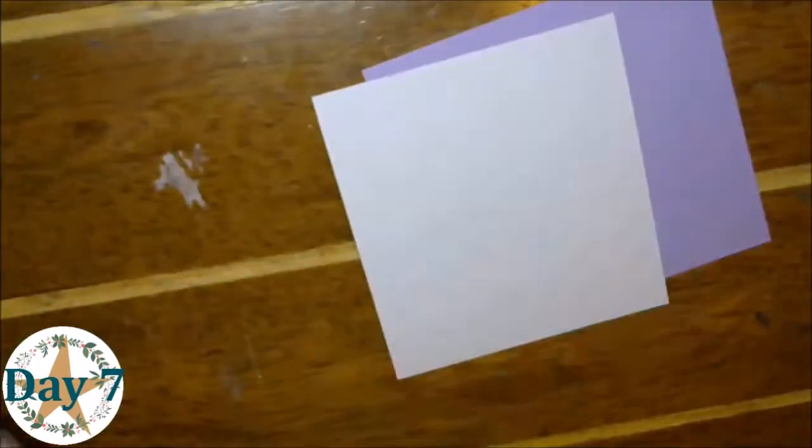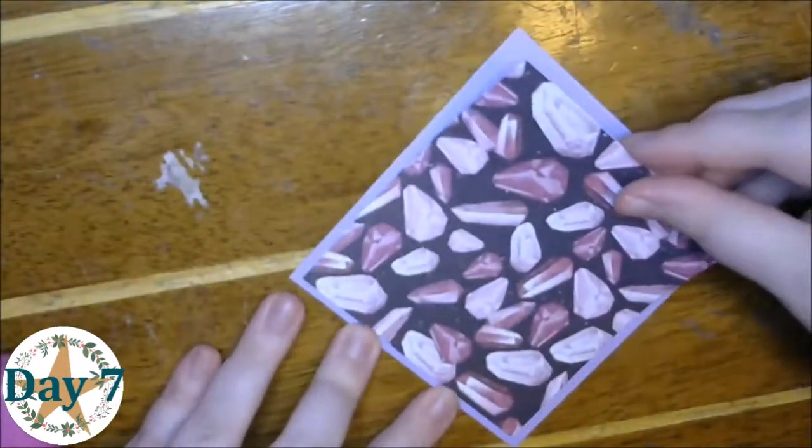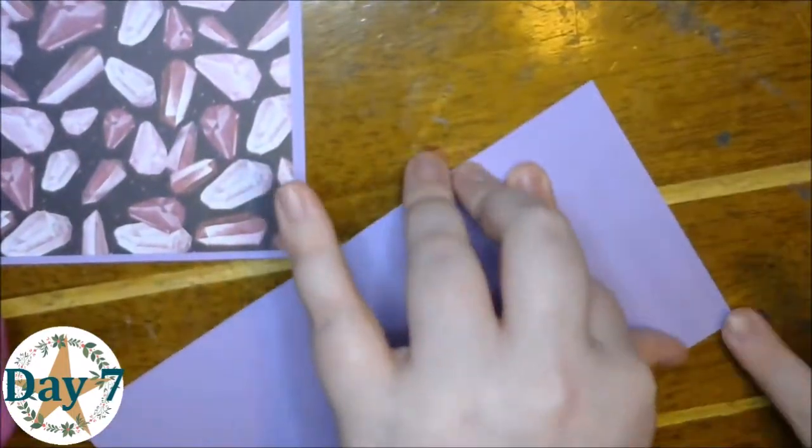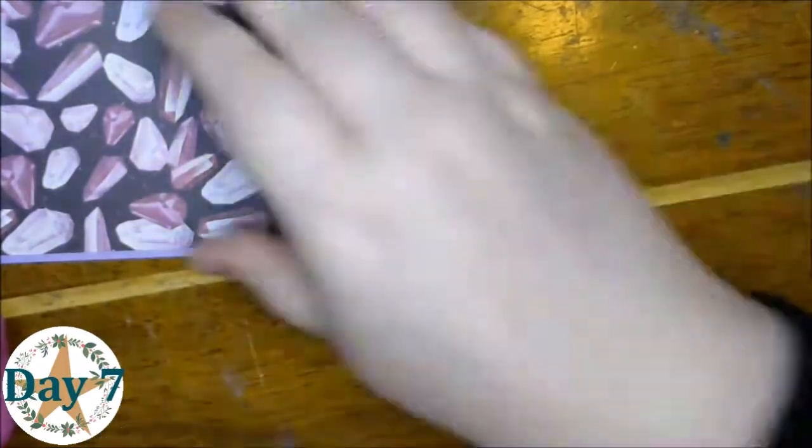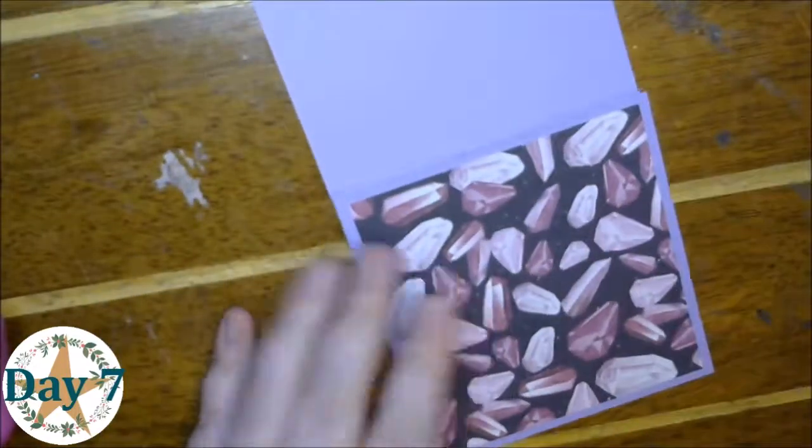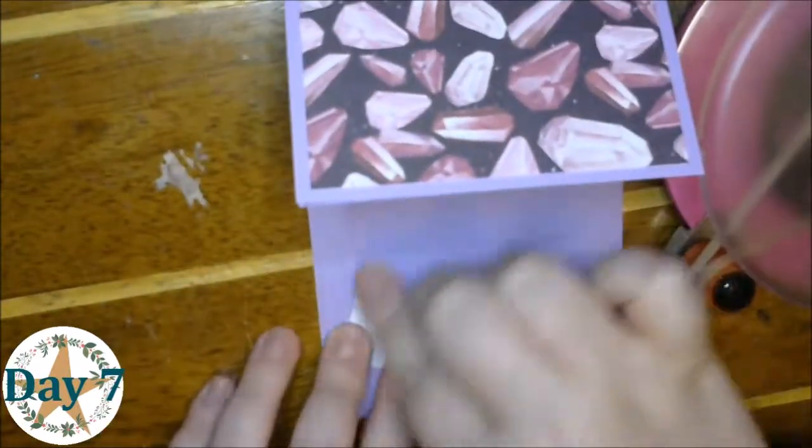So this first one I did a gem theme, so I started with a purple base. And here is my panel, and as you can see when you score it, you're going to get a little kind of tent-looking thing. You're going to want to place your panel on the bottom part of the tent.